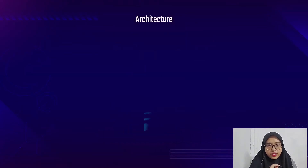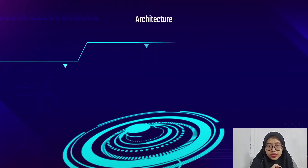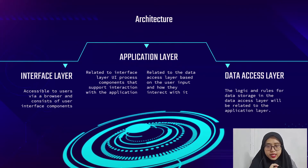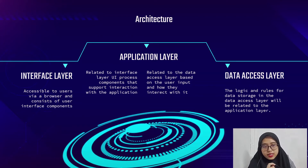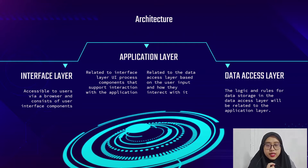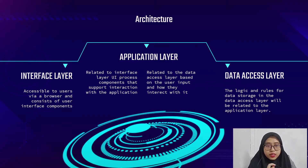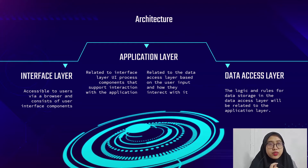Our architecture consists of three layers: the interface layer, application layer, and data access layer. The first layer is accessible to users via a browser and consists of user interface components. The logic and rules for data storage in the data access layer are related to the application layer. The application layer is related to both the interface layer and data access layer, supporting interaction through UI process components. The data access layer handles data based on user input and interaction.